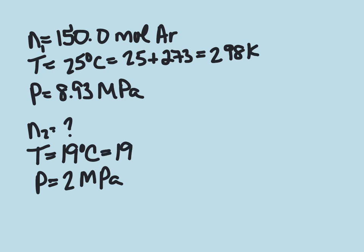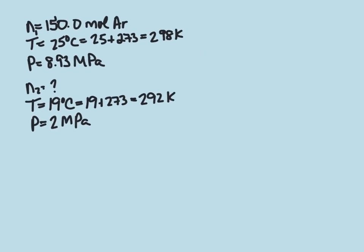And then 19 plus 273 gives us a temperature of 292 Kelvin. We're going to leave our pressure in megapascals because it's not necessary to switch that into atmospheres.